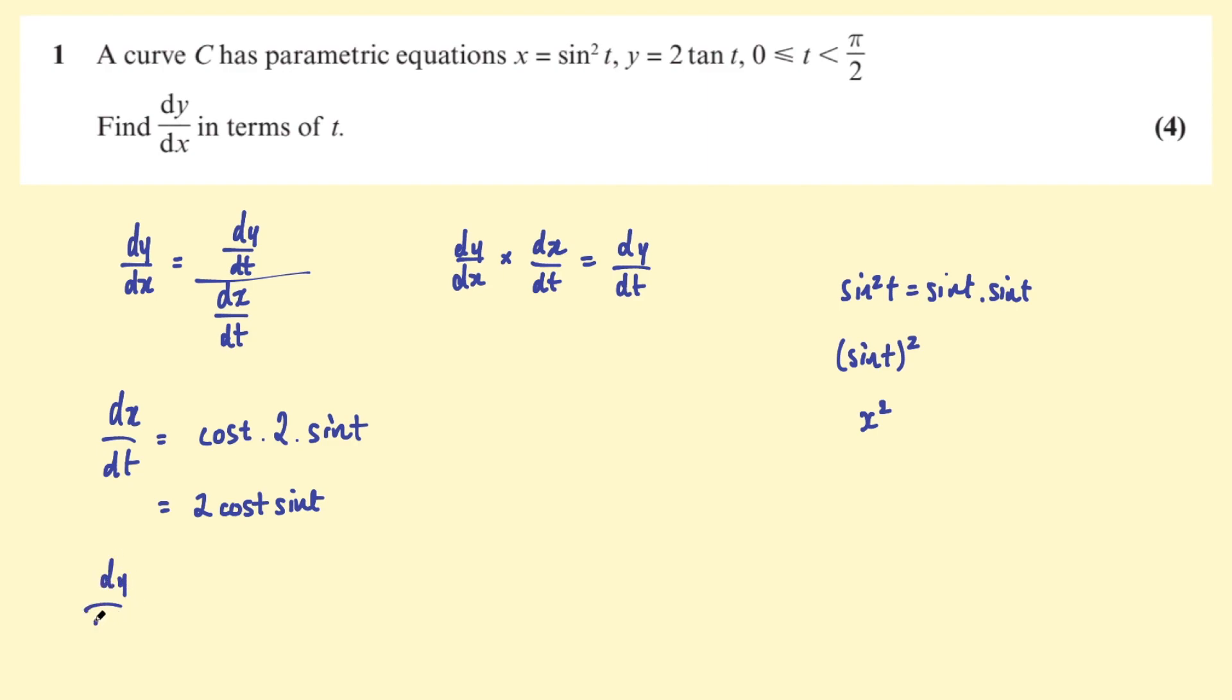dy/dt is the derivative of the tan function. We can ignore that constant, that's just going to stay there. The derivative of tan is 2 sec squared t. Now we have dx/dt and dy/dt. Now we can find dy/dx.